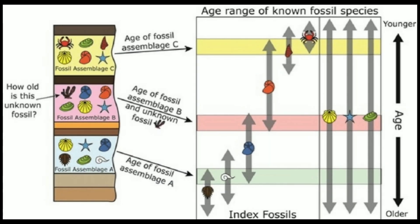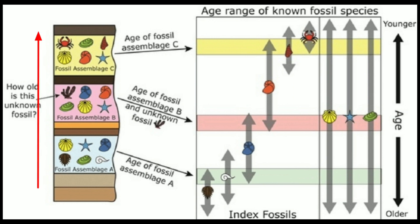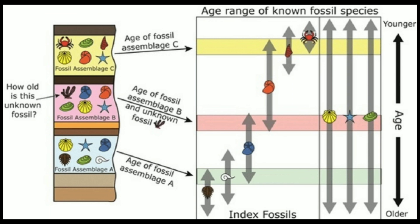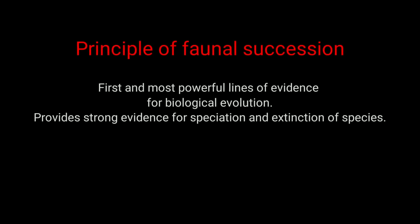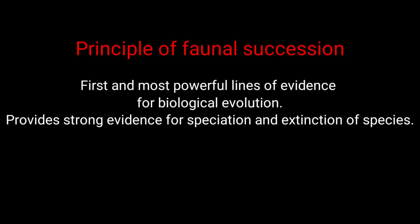The principle of faunal succession, also known as the law of faunal succession, is based on the observation that sedimentary rock strata contain fossilized flora and fauna, and that these fossils succeed each other vertically in a specific, reliable order that can be identified over wide horizontal distances.